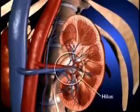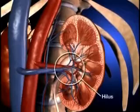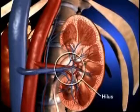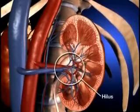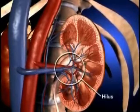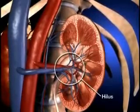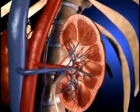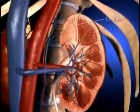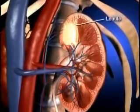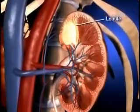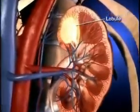The kidney is indented by a deep fissure called the hilus, where the blood vessels, nerves, and ureters connect to the kidney. The kidney is composed of up to 18 lobes. Each lobe is composed of nephrons.